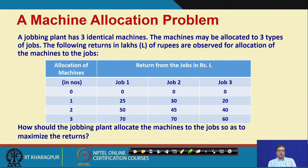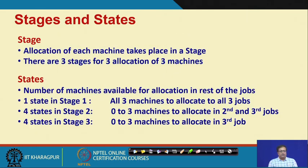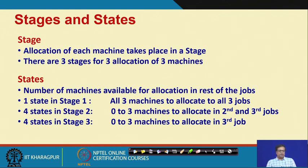You can allot all three machines to job 1, or all three to job 2, or all three to the third job, or any combination thereof. The question is: what is that combination which gives us the optimal, maximum possible return? We need to define the stages. Each allocation can be called a particular stage. We have three machines, so really we have three allocations, meaning three stages. The states are the number of machines available for allocation in the rest of the jobs.